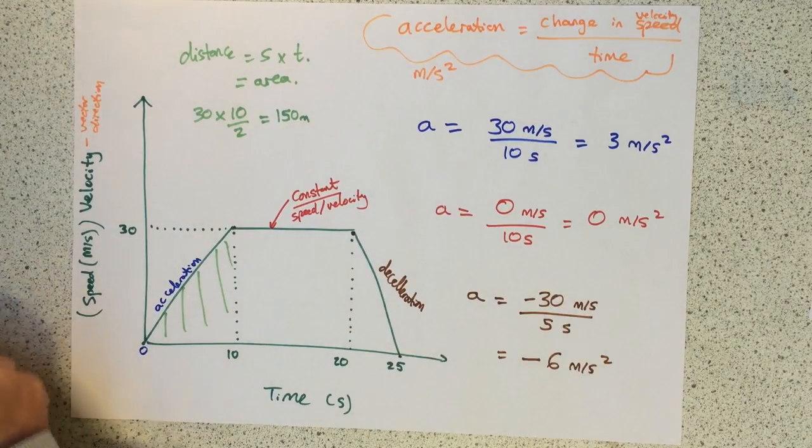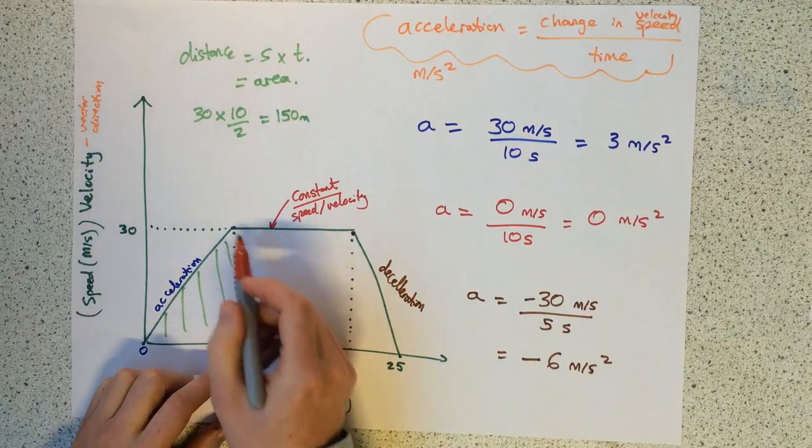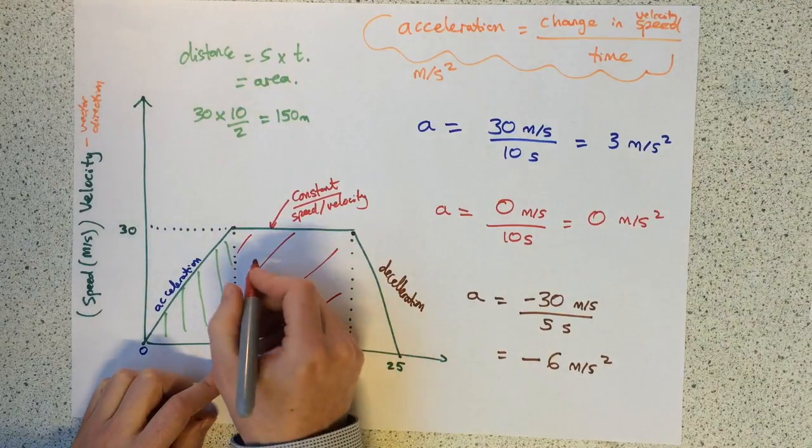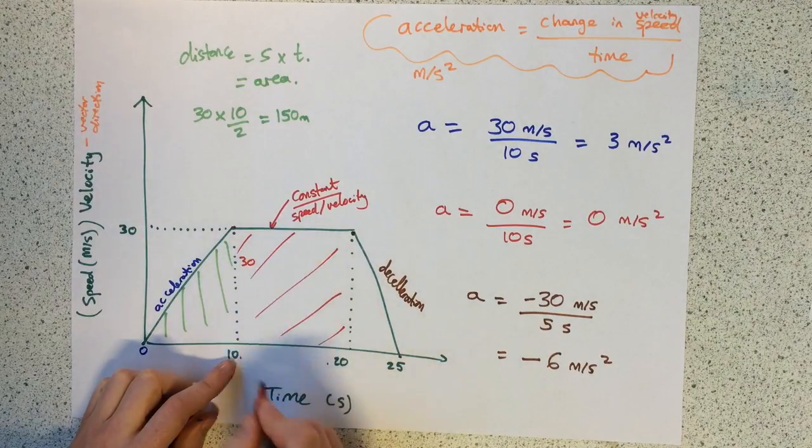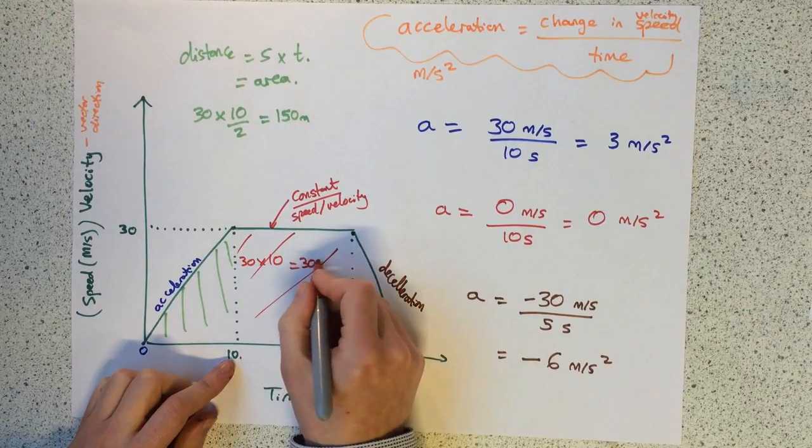The distance travelled in the second section, between here and here, it's just the area again. The height is 30, the base is 10. So the distance travelled in the second section is 300 metres.